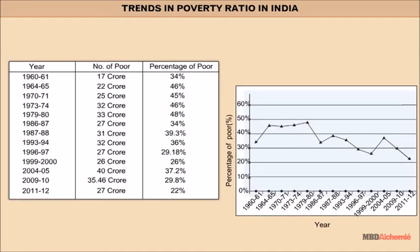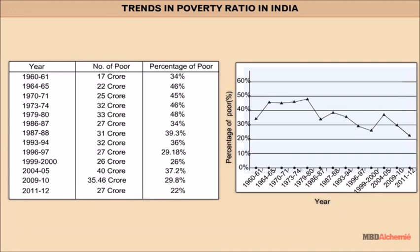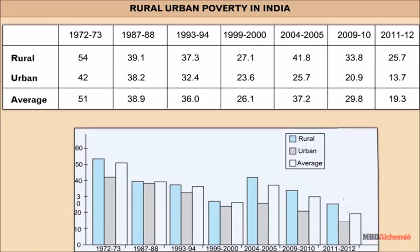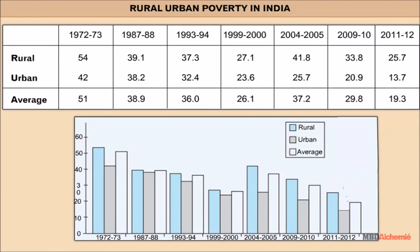The number of poor and their proportion to the population in India for the years 1960 to 2012 is shown in the table and diagram. In the 1990s, the absolute number of poor declined. In 1960-61, 34% of the population was poor, which increased to 46% in 1973-74, then fell to 22% in 2011-12. In 1972-73, 51% of the total population was below the poverty line, with 54% rural and 42% urban poverty. By 2011-12, poverty stood at 22%, comprising 25.7% rural and 13.7% urban population below the poverty line.